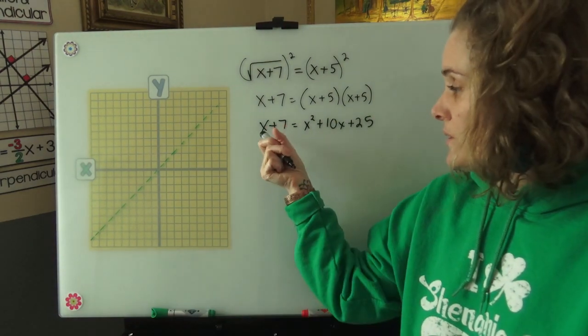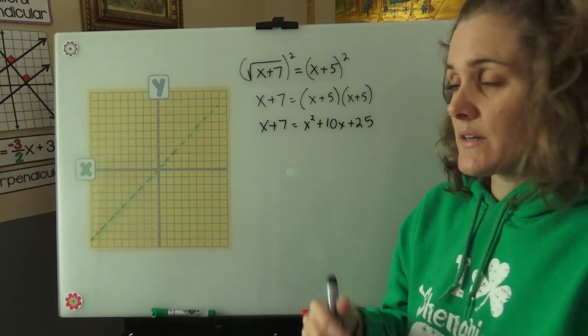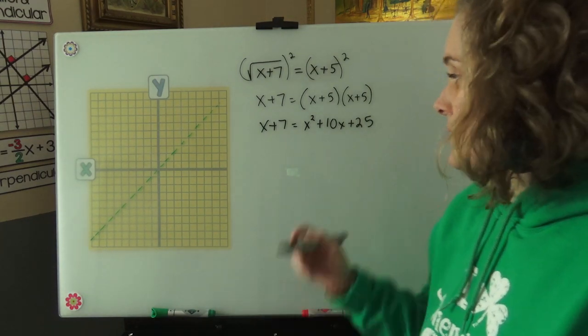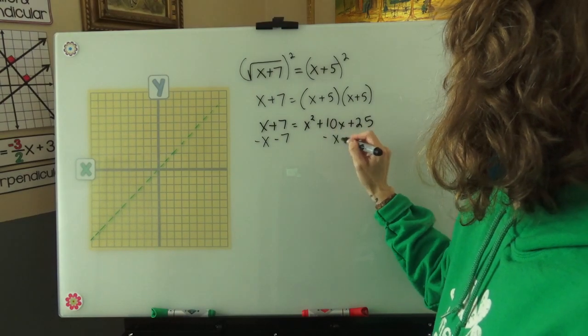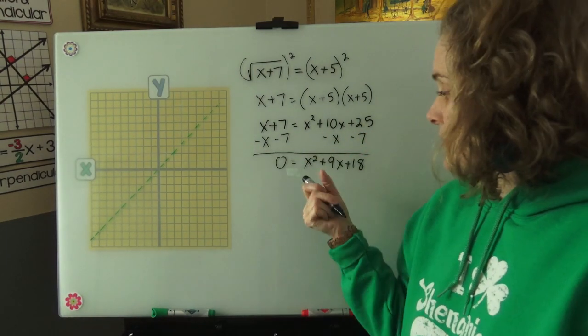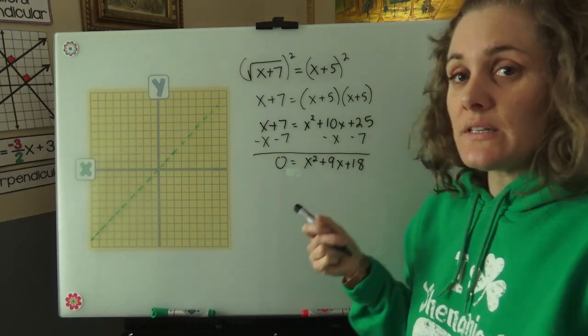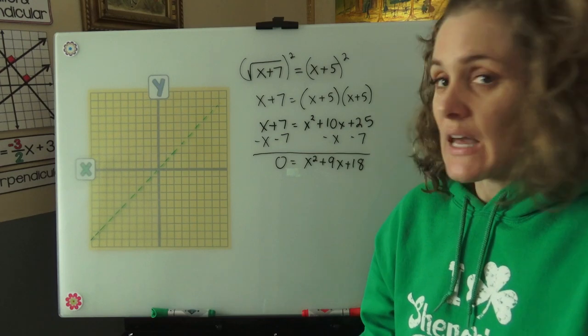And then we would need to get rid of this x and the 7 from the left side and put it onto the right side to set our equation equal to 0. Last we'll factor this side by asking what two numbers multiply to get 18 that add to get 9, and that would be 6 and 3.